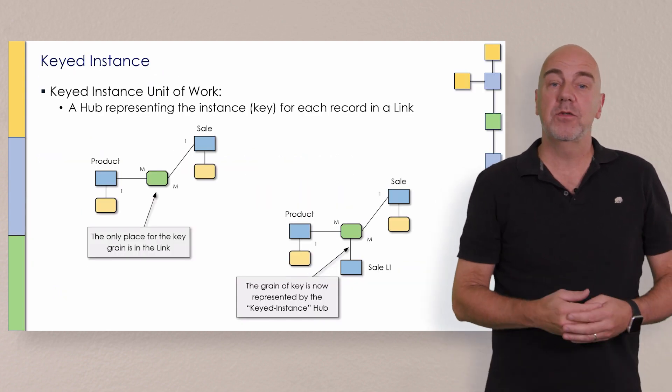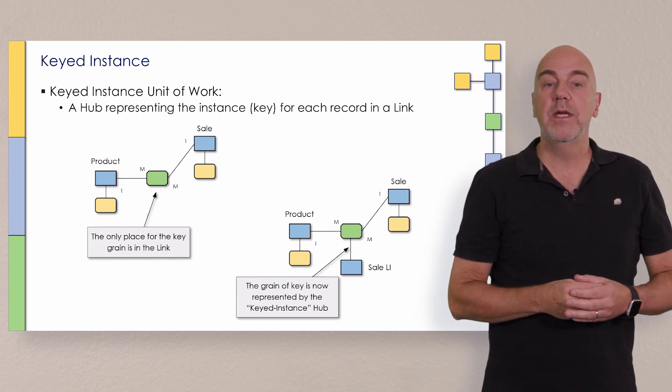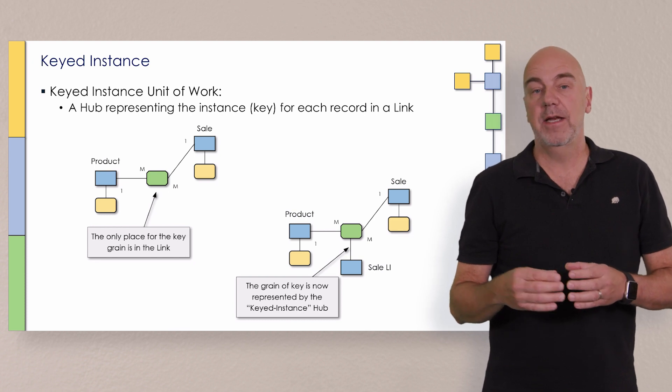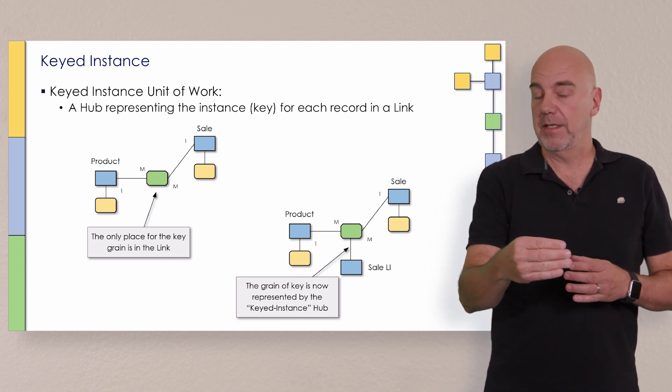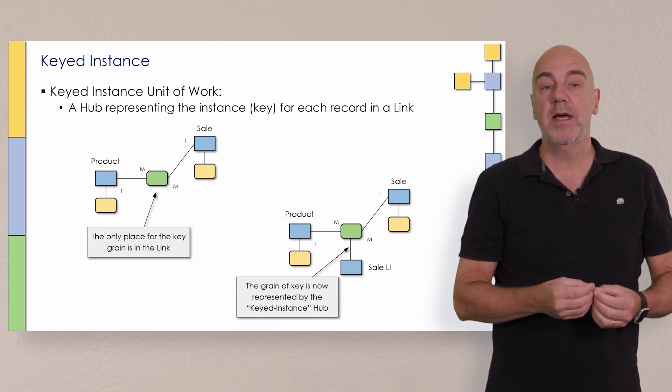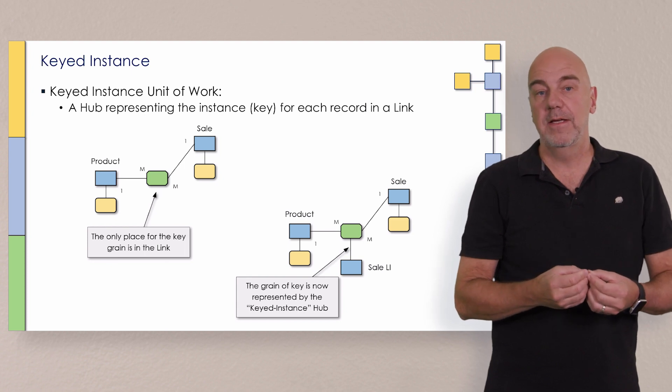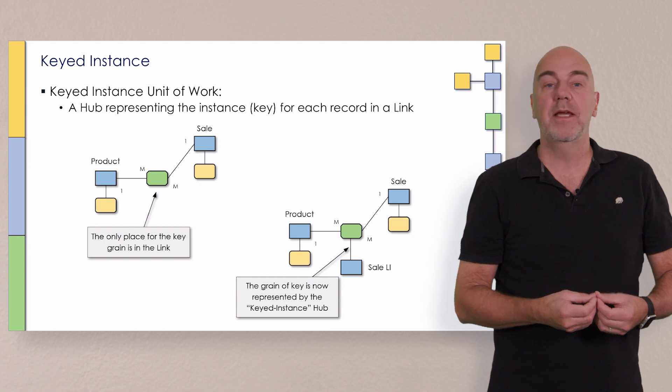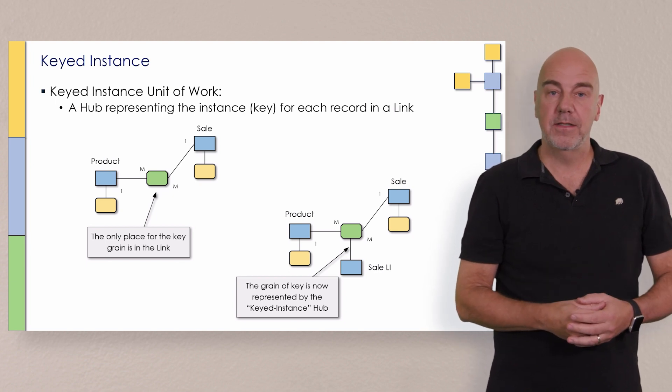Before we begin, just to recap, keyed instance is when we establish a hub key at the same grain as a relationship that already exists. And this would only be applicable in cases where the only place in the model where that level of grain exists is in the link itself, and we need to do something with it. In that case, we now need to look at a keyed instance hub.